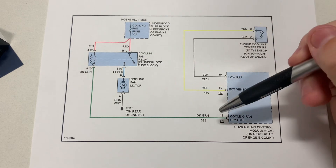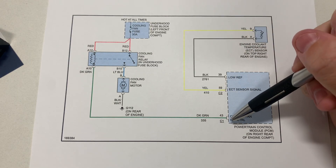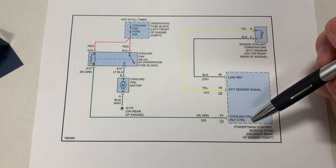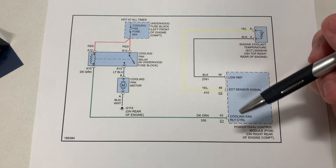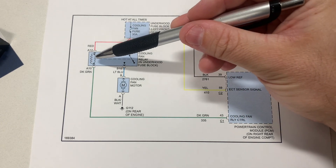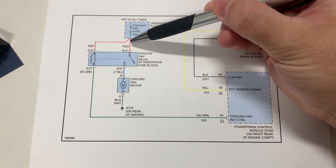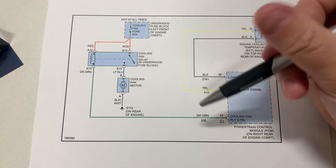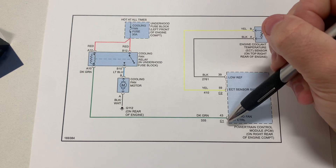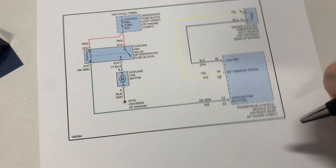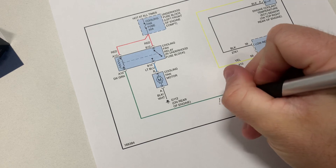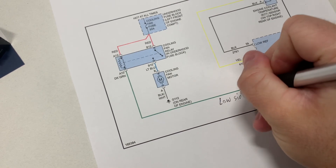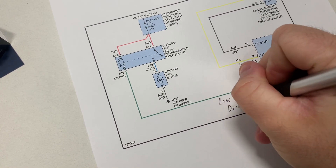The question becomes: is this a high side or a low side driver output circuit? It's very simple — you look at the load it's controlling, find what it already has, and since it already has power, we know the computer is controlling the low side, in other words the ground. So I'm going to label that right here — this is a low side driver.